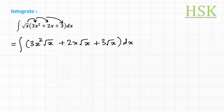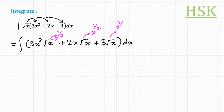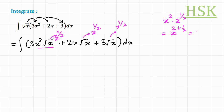Now, √x can be written as x to the power of 1/2. In the first term, x² × x^(1/2) = x^(2 + 1/2) = x^(5/2). Similarly, x × x^(1/2) = x^(3/2).